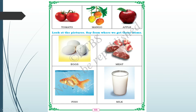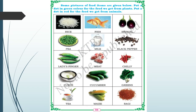Now look at eggs, meat, fish, and milk. Where do we get these from? We get these from animals. So we get food from both plants and animals.